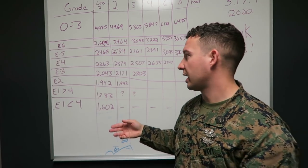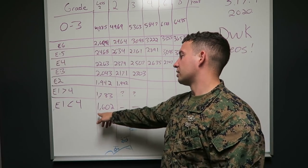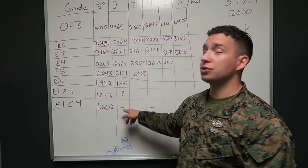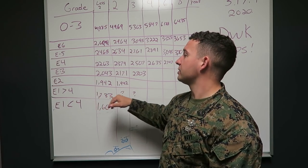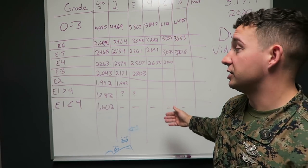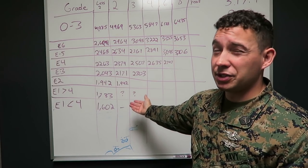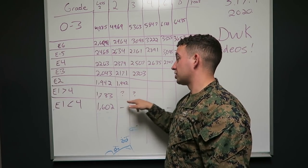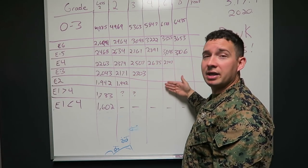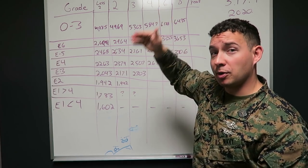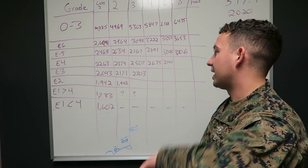So to start it off, when you go to boot camp, you're probably E1 less than four months. So they're going to put you at $1,602. After four months, so pretty much after you make it out of boot camp, you're going to get increased to $1,733. Mind you, this is still less than two years, but all E1s should be less than two years. If for some reason you get bumped down in pay grade and you've been over two years, you're still going to pretty much cap out of that paycheck.